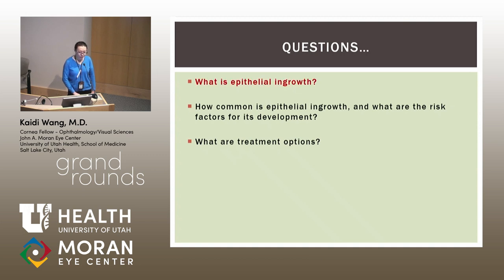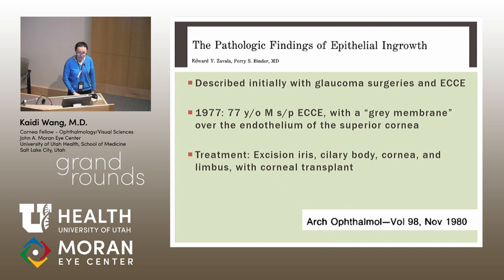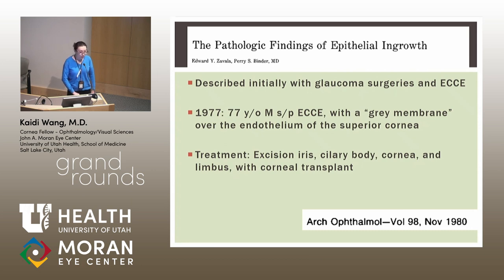Epithelial ingrowth, as it sounds like, is epithelium growing where it should not be. It actually wasn't first described with LASIK — it was first described with glaucoma surgeries and extracapsular procedures. We actually have pathology from some of these patients. This was an interesting case of a 77-year-old man who received extracap surgery in 1977, and then had a gray membrane grow over the epithelium of the superior cornea and also over some of the anterior segment structures.